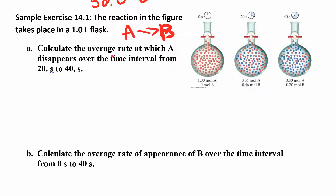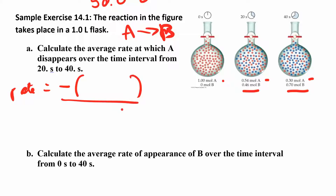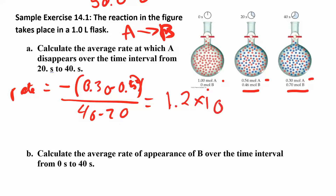We want to calculate the average rate at which A disappears from 20 to 40 seconds. Since A is a reactant, we use the negative sign. Rate equals negative × (final minus initial) / (final time minus initial time) = negative × (0.30 − 0.54) / (40 − 20). Working that out gives 1.2 × 10⁻² M/s.